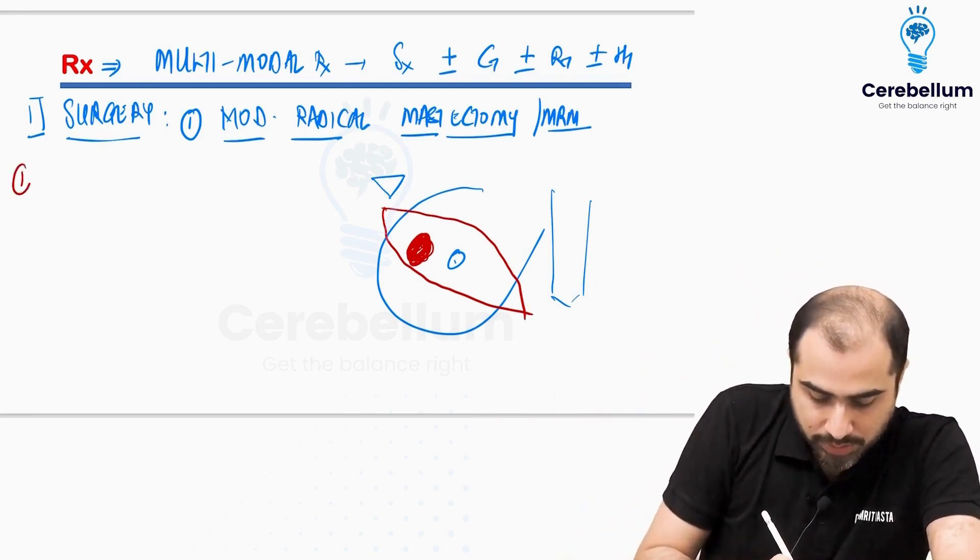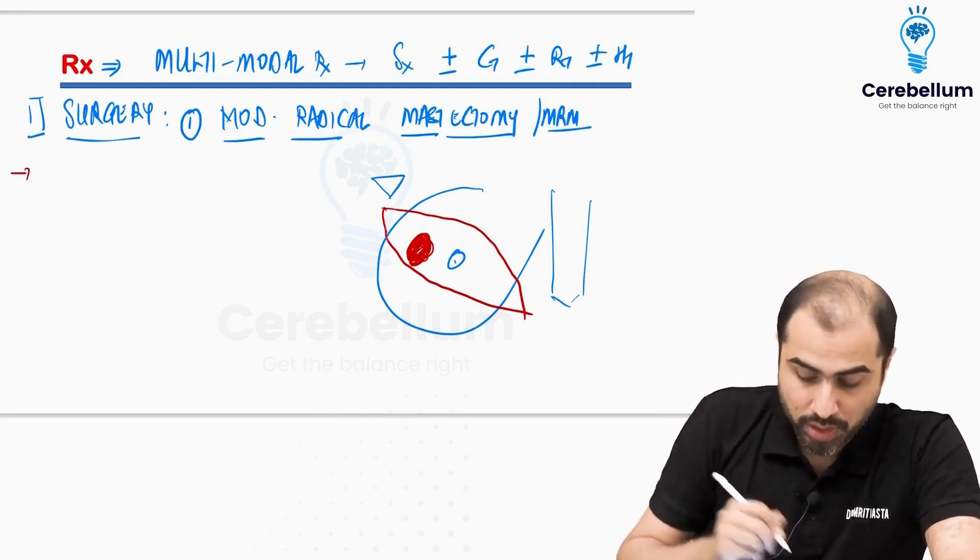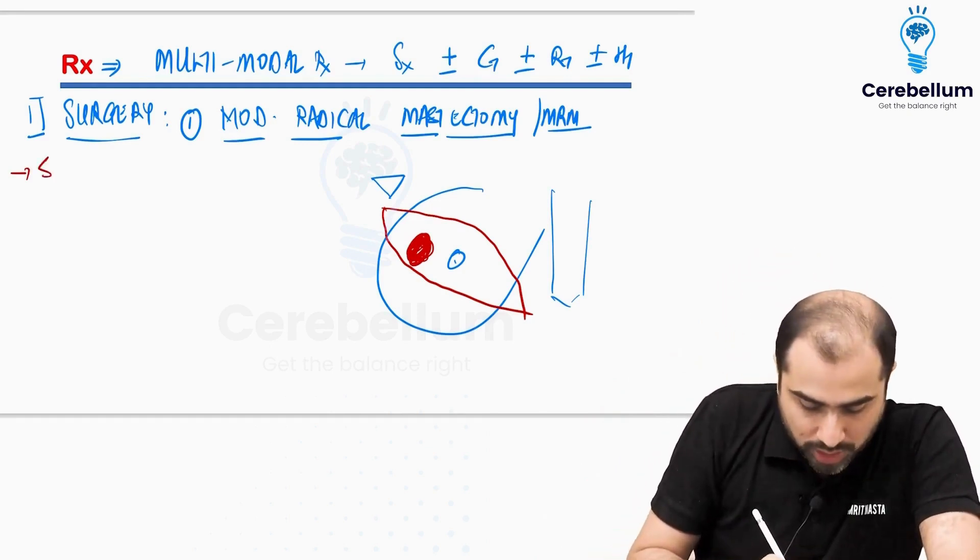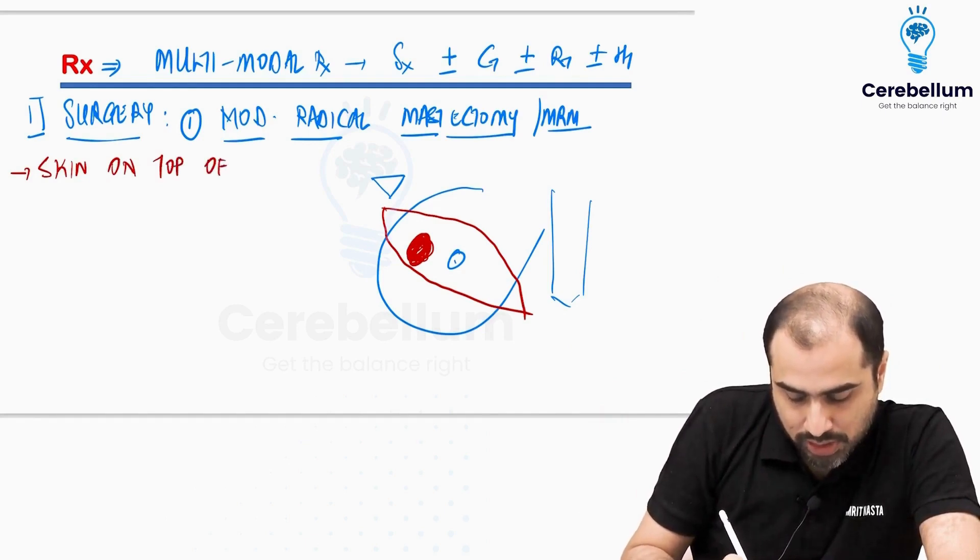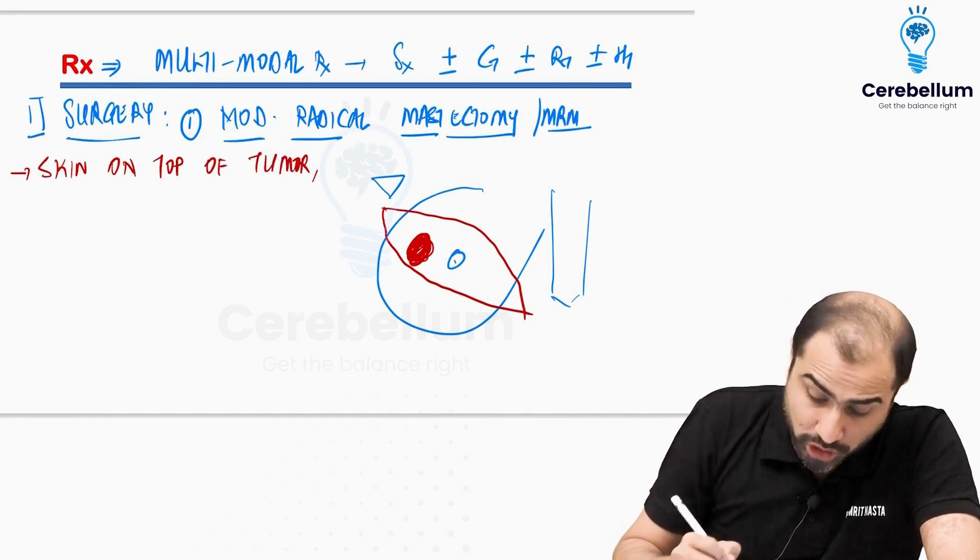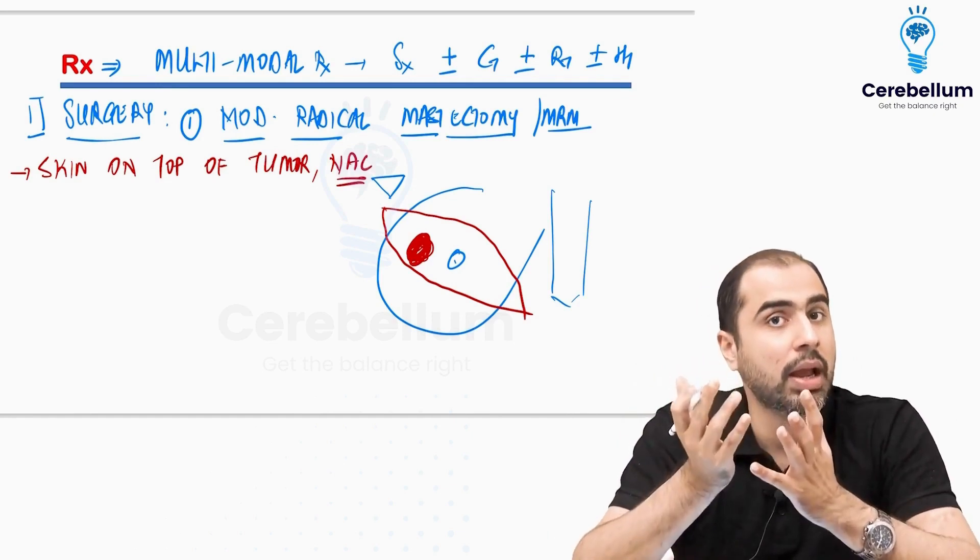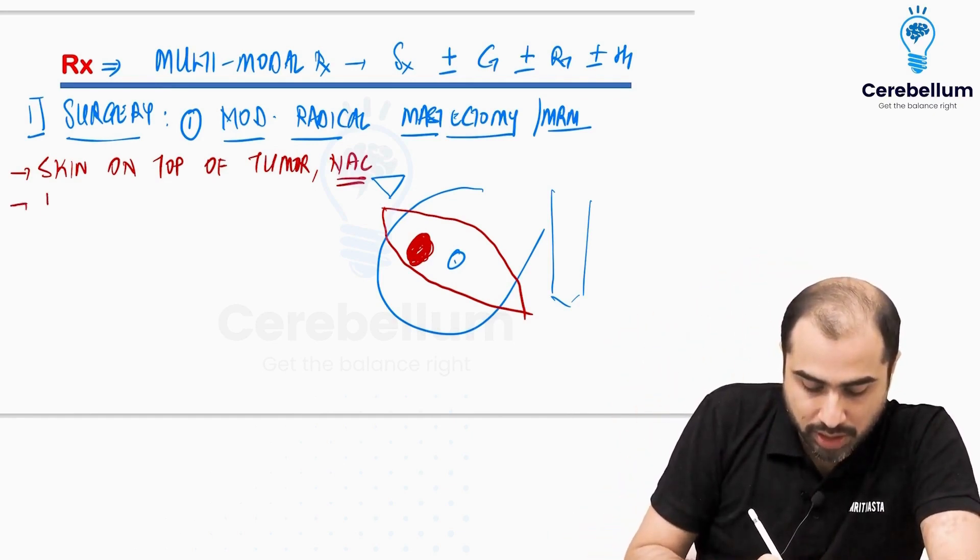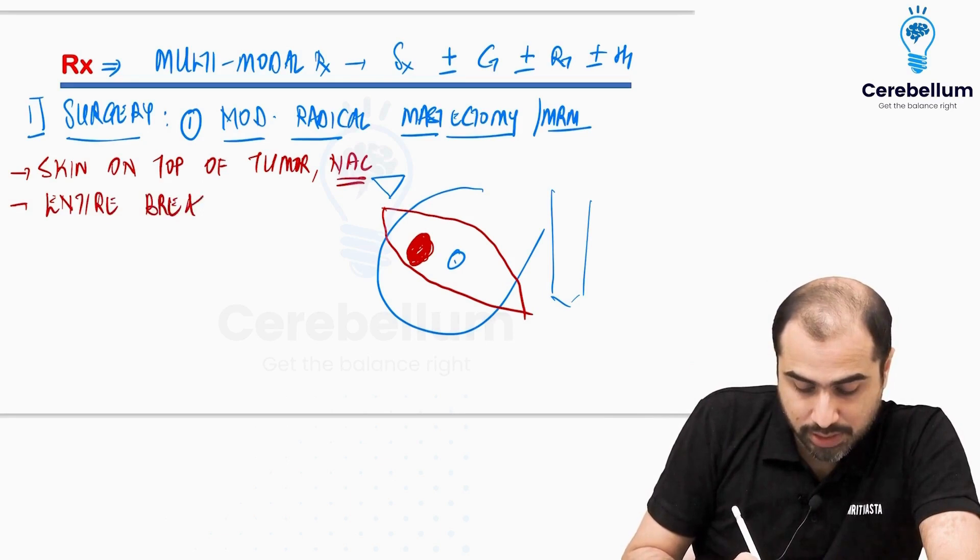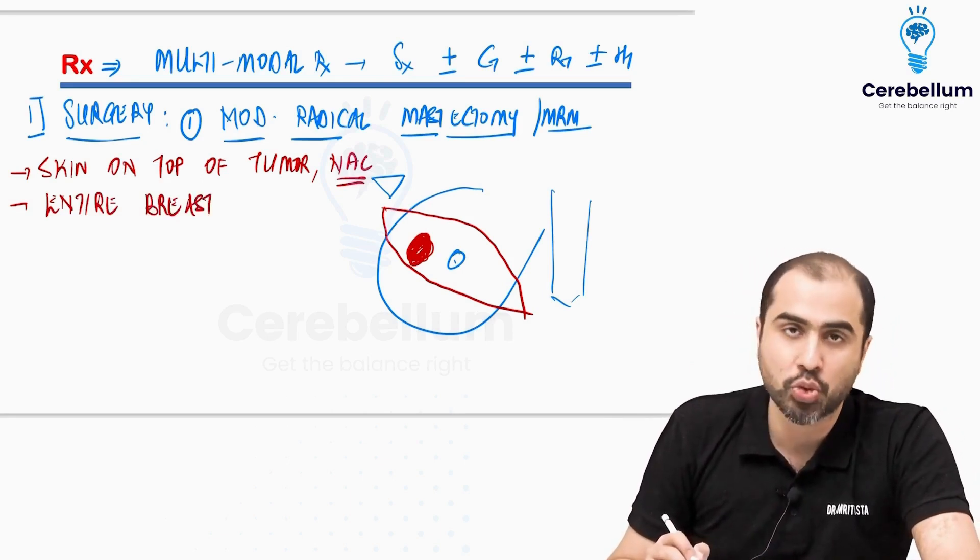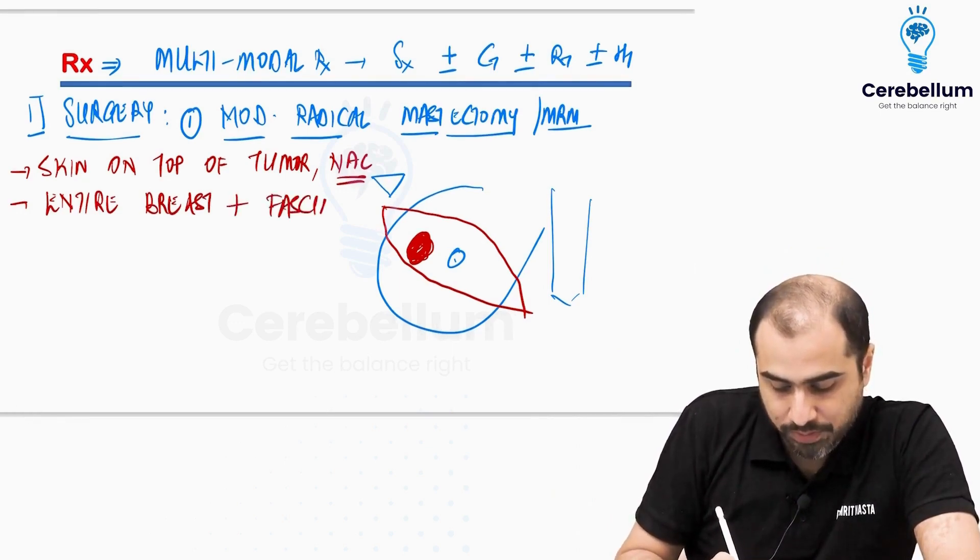So what I am removing is, you understand mastectomy is based on what is removed. I am going to remove, first the incision is on the skin, so I will remove the skin on top of the tumor. The skin is removed on top of the tumor. It should include the nipple areolar complex, so nipple areolar complex should be in the incision and removed as a part of the surgery. Then I go inside and I remove the entire breast parenchyma, including the axillary tail of Spence. Entire breast, fibro fatty tissue, all the way till the pectoral fascia. Entire breast plus pectoral fascia is all going to be removed.